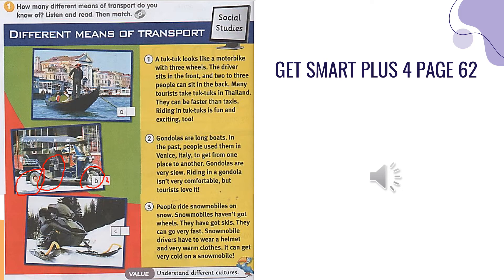Paragraph two: gondola. Gondolas are long boats, so between a and c, which one is the gondola? It is a — a is the gondola. Paragraph three: snowmobiles haven't got wheels, there are no wheels, it has skis, so c is the snowmobile.